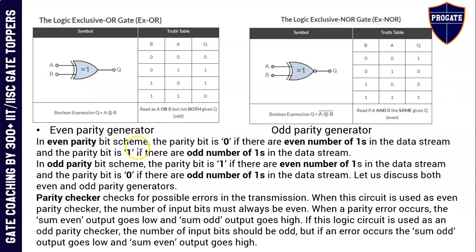In even parity bit scheme, the parity bit is 0 if there are an even number of ones in the data stream, and the parity bit is 1 if there are an odd number of ones. In odd parity bit scheme, the parity bit is 1 if there are an even number of ones, and the parity bit is 0 if there are an odd number of ones. Parity checker checks for possible errors in transmission. When used as an even parity checker, the number of input bits must always be even. When a parity error occurs, the even output goes low and the odd output goes high.